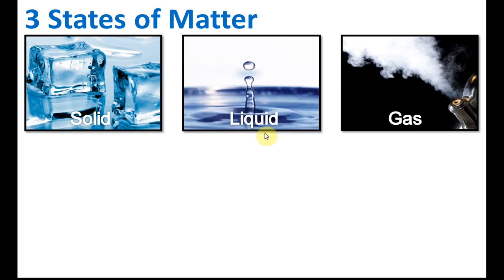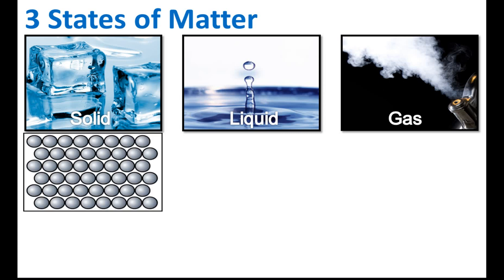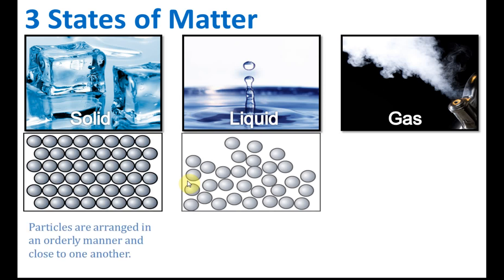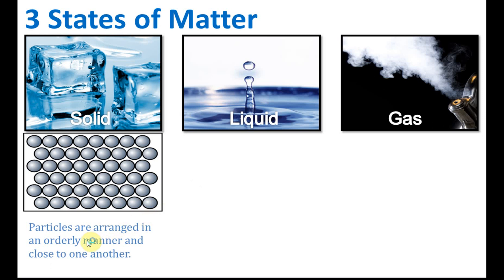So we have three states of matter: solid state, liquid state, and gaseous state. The very first thing we need to note is the arrangement of particles. For solid, the particles are arranged in an orderly manner and close to one another. The arrangement looks like this — they are very close to each other and nicely arranged in an orderly manner.